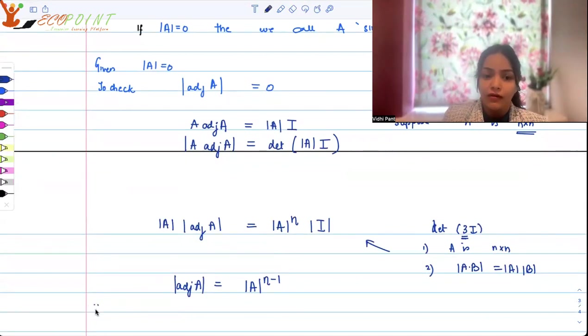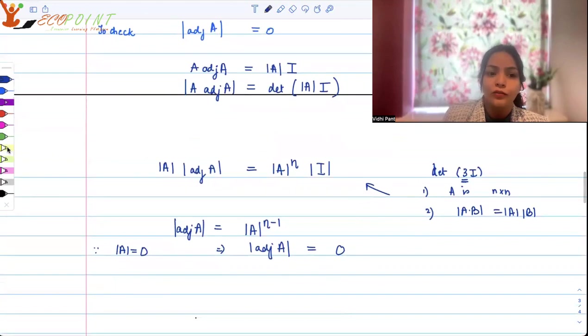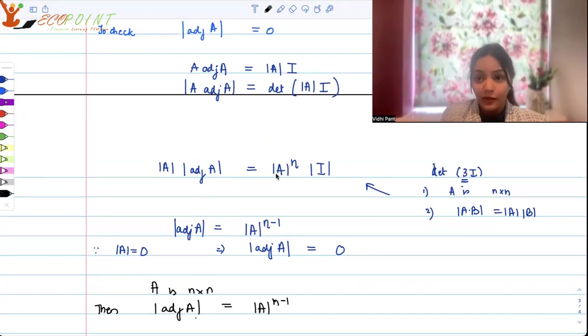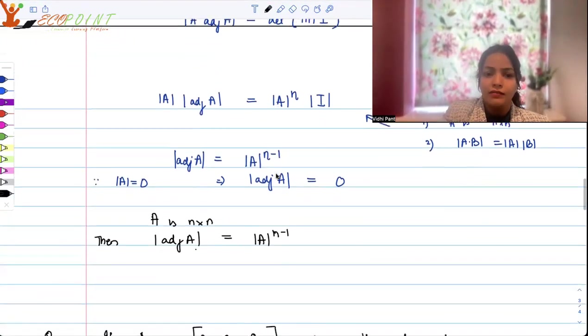Now since A is singular because determinant A is equal to 0, that implies that determinant of adjoint A is equal to 0. Now why I'm doing this question with you guys is also for the property that you must always remember one of the properties of adjoint A, determinant of adjoint A when A is n cross n then determinant of adjoint A will turn out to be determinant of A to the power n minus 1. The process of that proof is the same. It's just that I deliberately used that the determinant of A is 0 in the end.